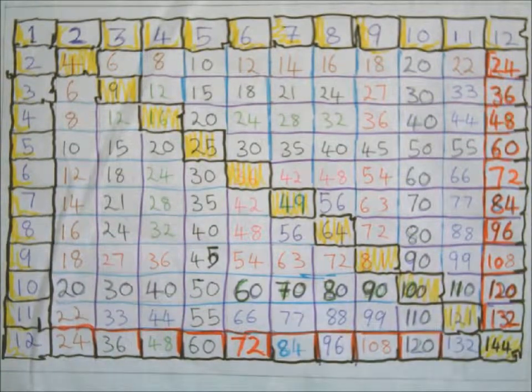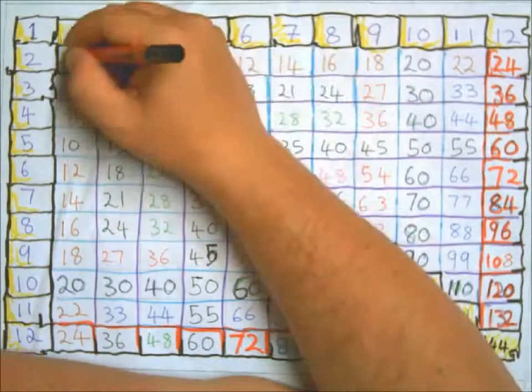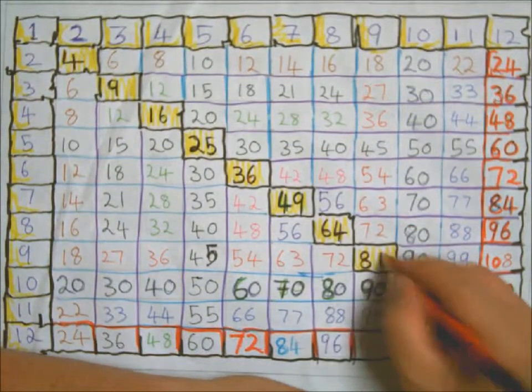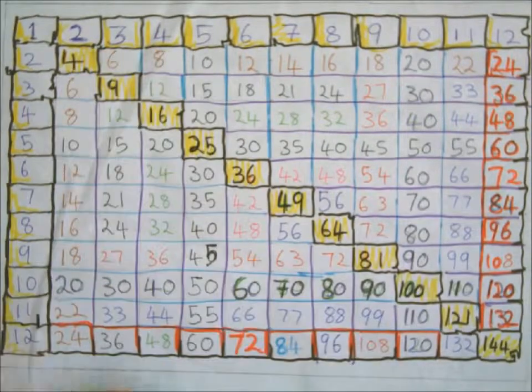Let's have a look now at square numbers: 1, 4, 9, 16, 25, 36.